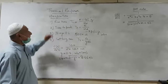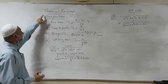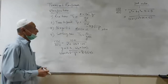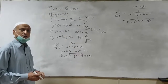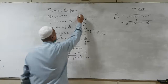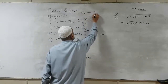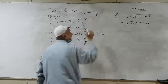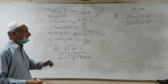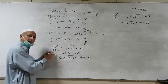As-salamu alaykum. The second part of the lecture is dealing with transient response. For transient response, we need two important parameters. The parameters are omega n and zeta. Once we have found those — which we have found for a transfer function — let's take this again as an example.